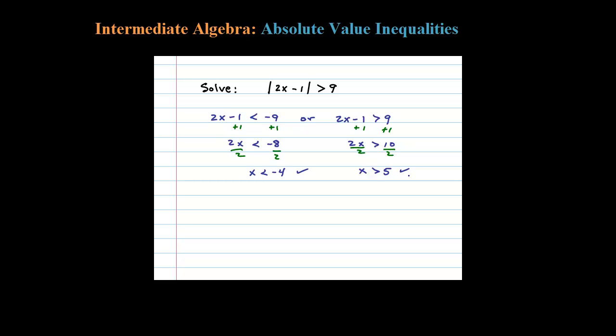So all the numbers less than negative 4 and all the numbers greater than 5 should solve the original inequality. Now let's graph all those numbers on a number line.